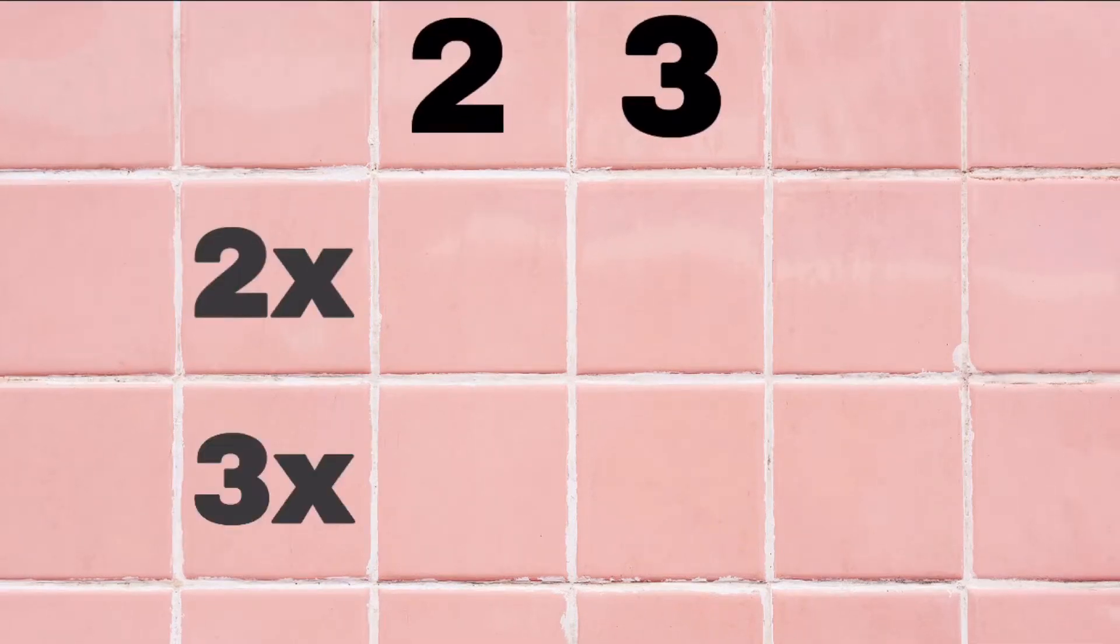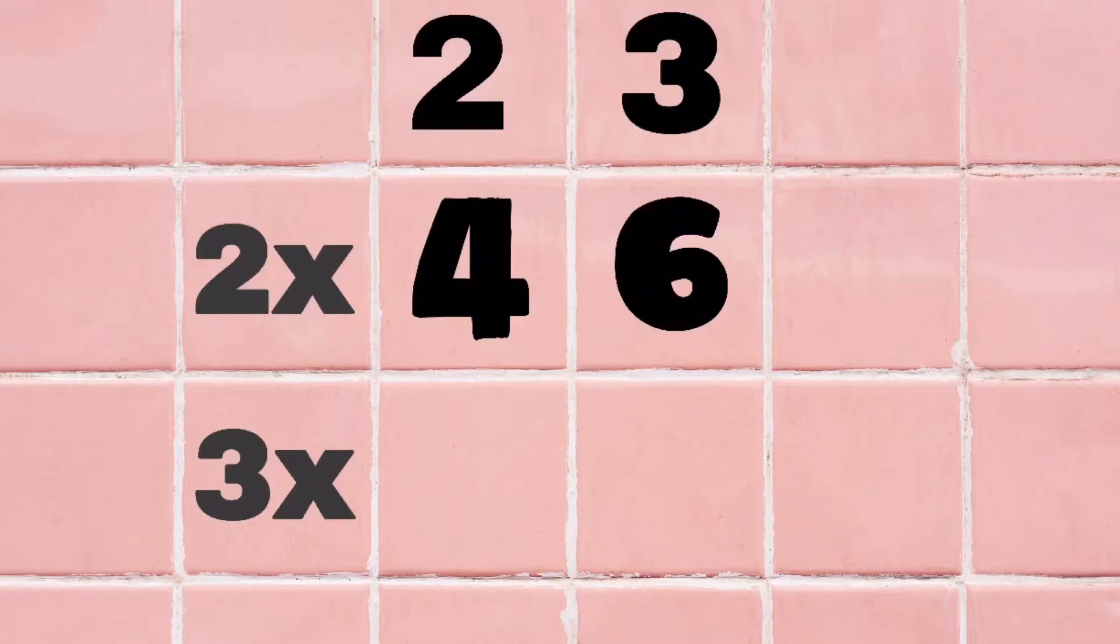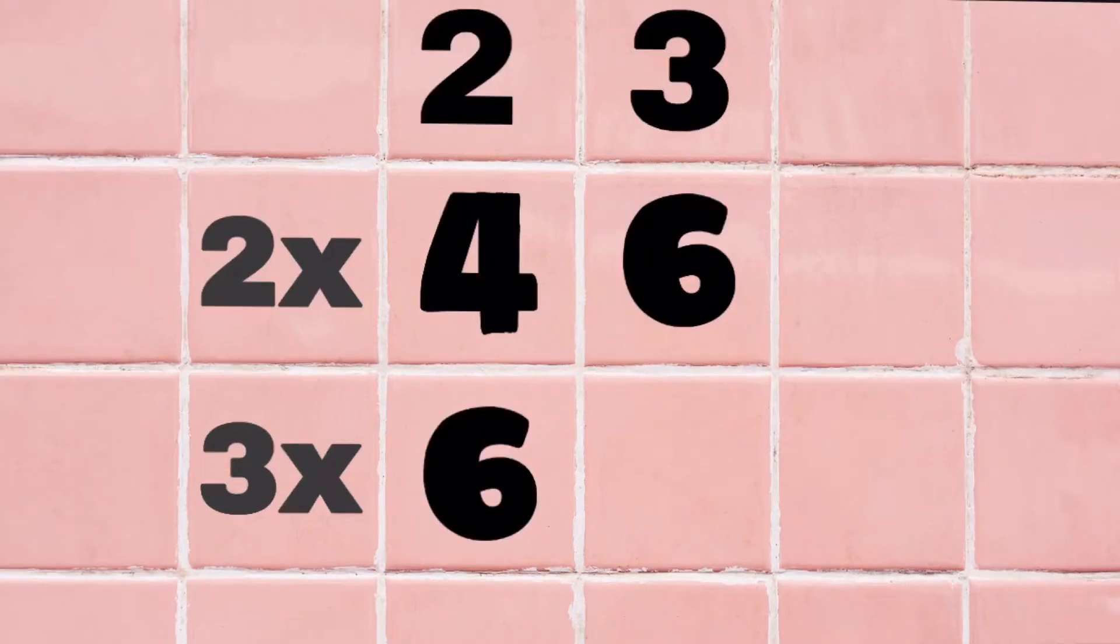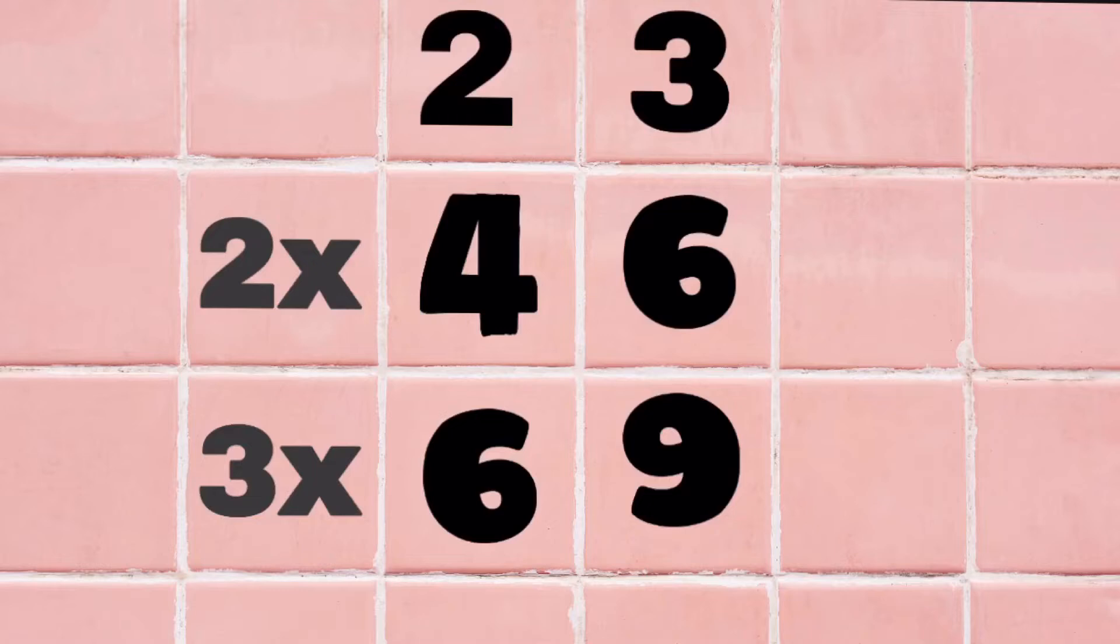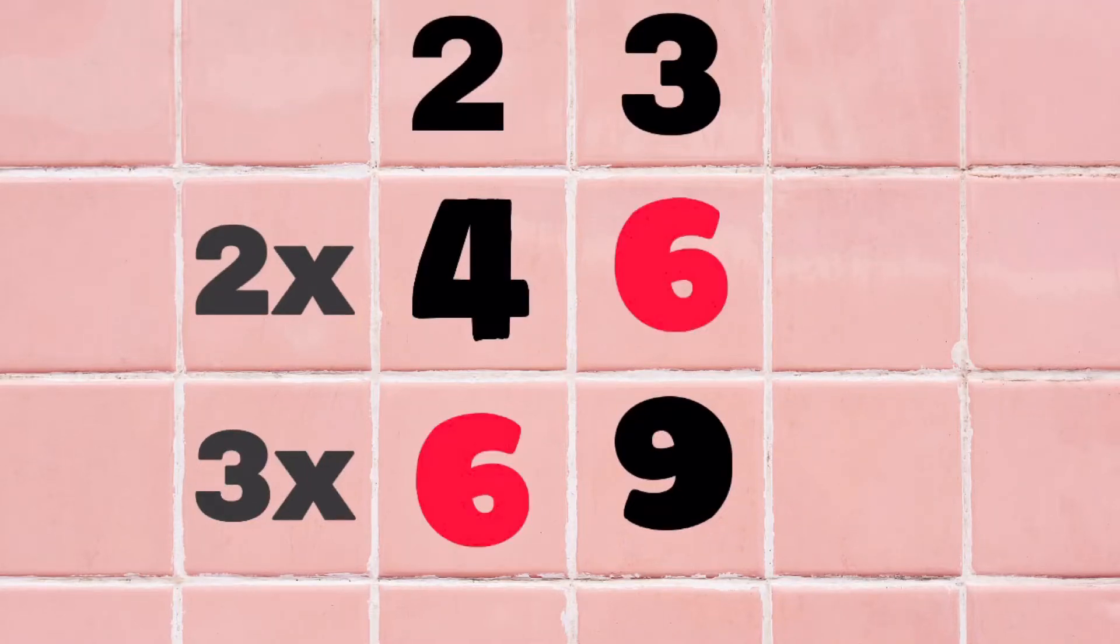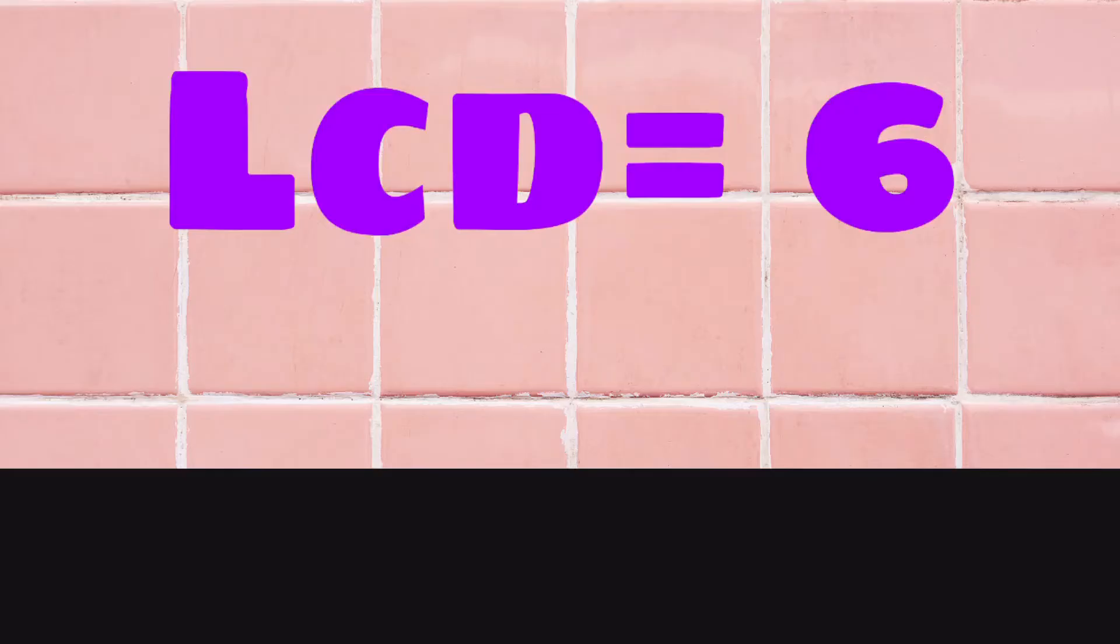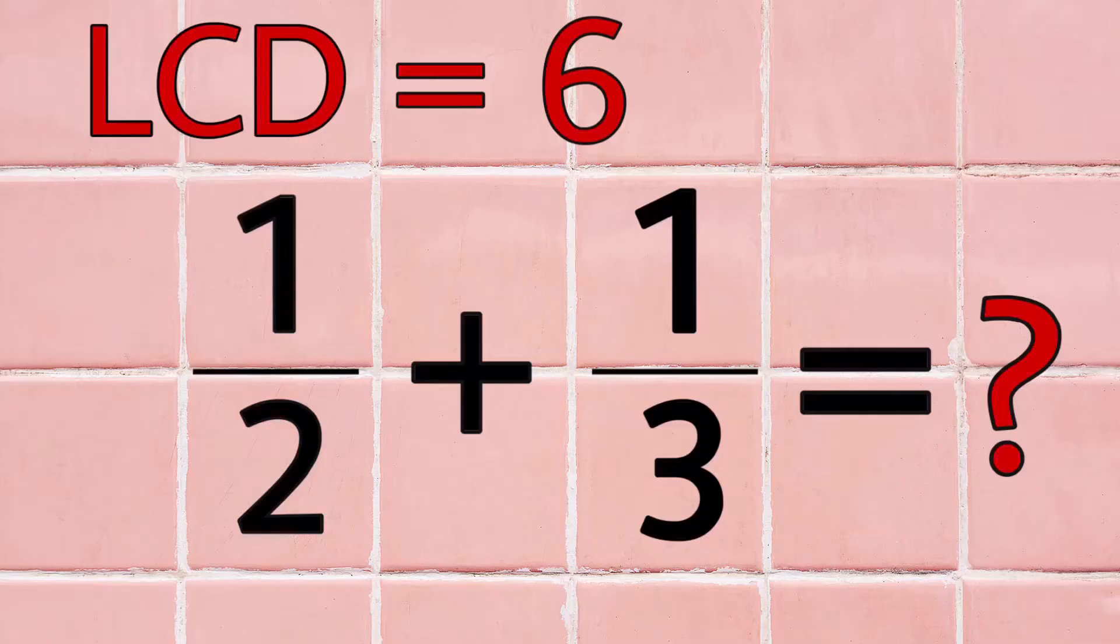2 times 2 equals 4. 2 times 3 is 6. 3 times 2 is 6. 3 times 3 is 9. There, we see that 6 is common for both numbers. So, we use 6 as the LCD of 1 half and 1 third.